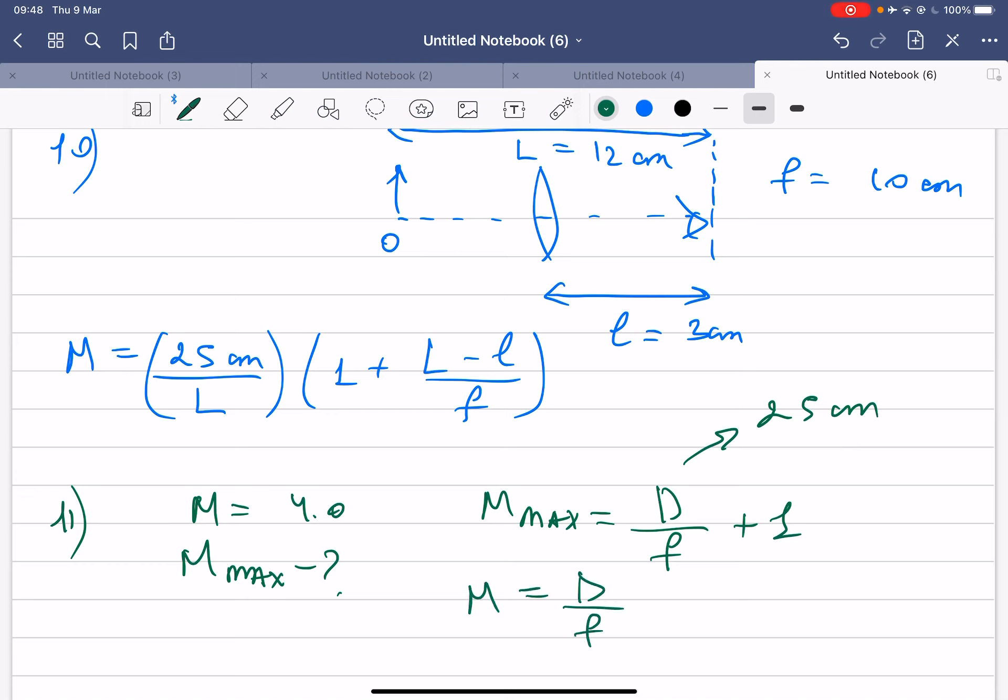Okay, so right now, first we can find from here D, which is M times f. And here we can substitute that one, M times f over f plus 1. So f will cancel out.